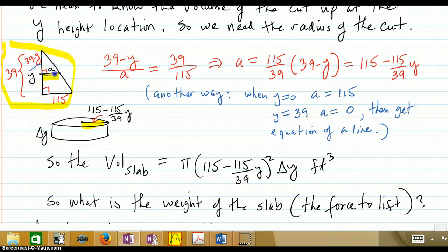The A, I'm calling this A. This is a habit I have. So, similar triangles. 39 minus the A is to A as the big height is to the corresponding part, 115. So you work that all out, and A is equal to this. Another way you could have gotten that was to say it's a linear relationship.